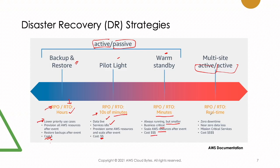Warm standby costs a bit more because it is always running some services. Moving to active-active, this is the most expensive strategy. There is near-zero downtime because both the production region and the disaster recovery site are always active. Near-zero data loss is achieved through real-time replication. If you have really mission-critical services, you may need to go this route, though it is the most expensive option.